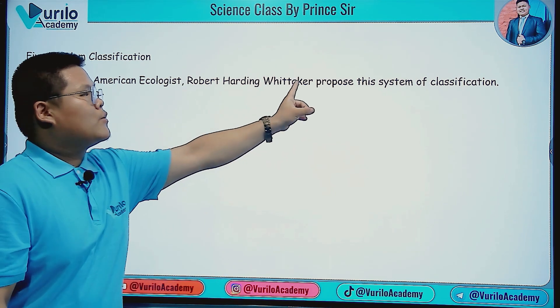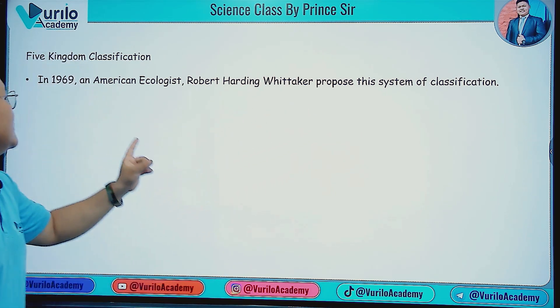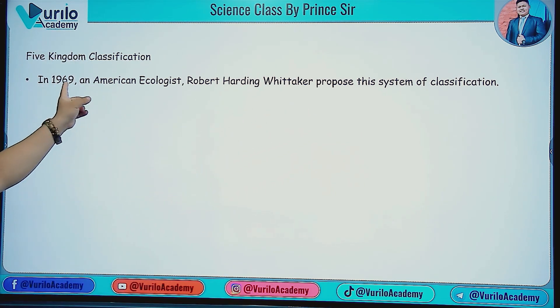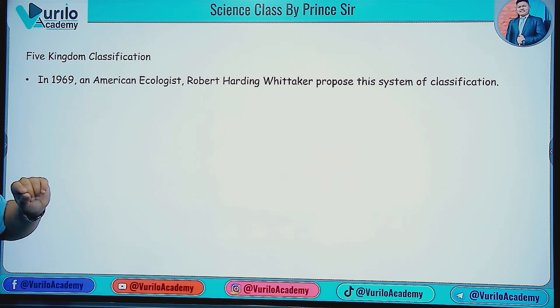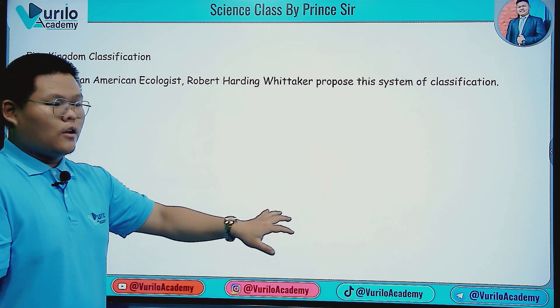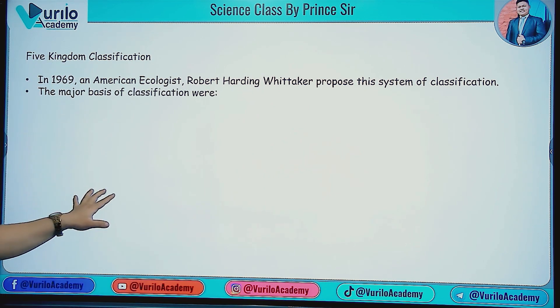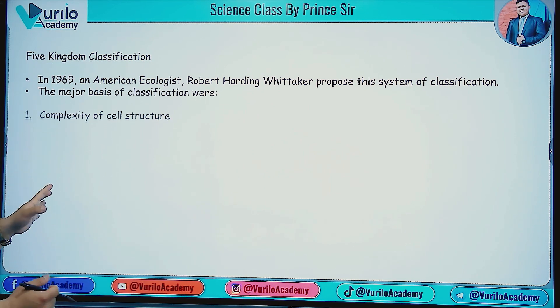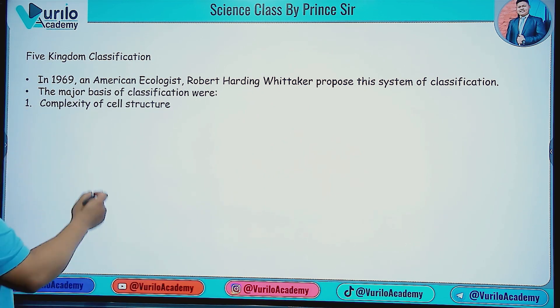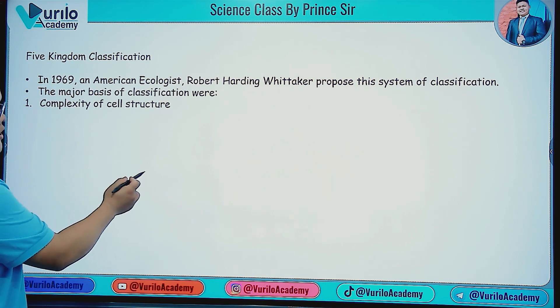The five kingdom classification was proposed by Robert Harding Whittaker in 1969. He was an American ecologist. This is an important point to note for exams.